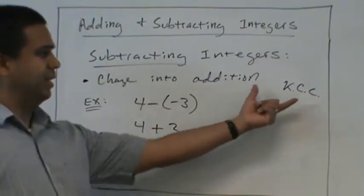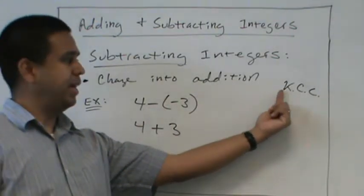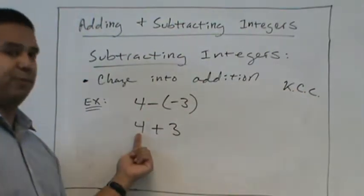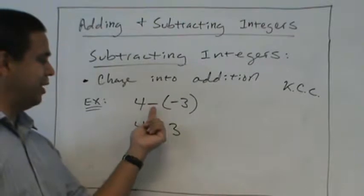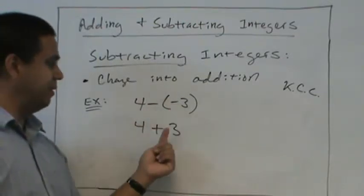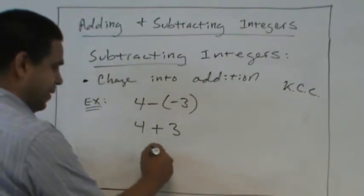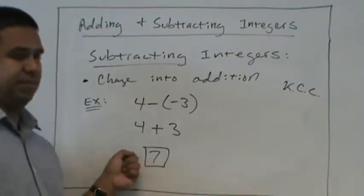So this would become 4 plus 3. If we're using keep change change, then the idea is to keep the 4, change subtraction to addition, and we change the negative to a positive. And we can see the answer is 7. Very easy.